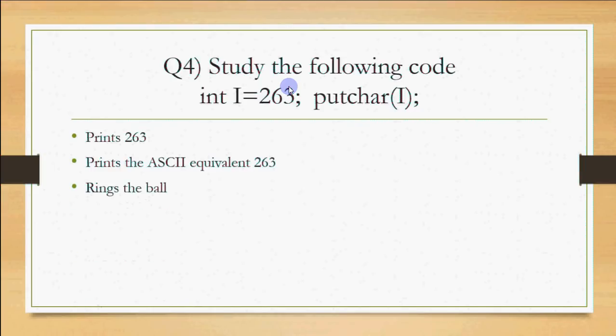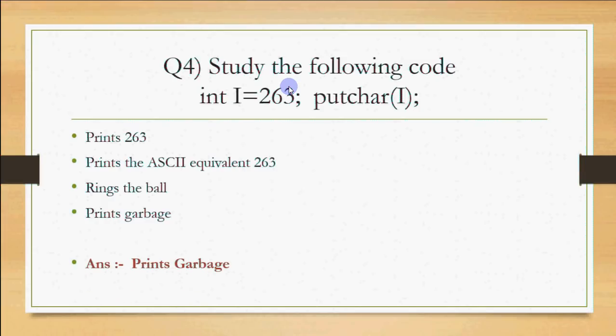Here is the problem: 263 is not a valid ASCII index. ASCII is a 7-bit code, which means 2 raised to the power 7 equals 128 characters. Even extended ASCII with 8 bits goes up to 255. Since 263 is out of that range, the program will print garbage.